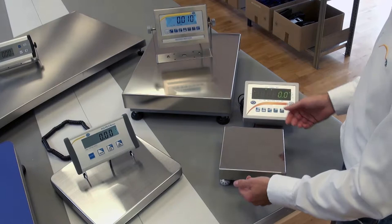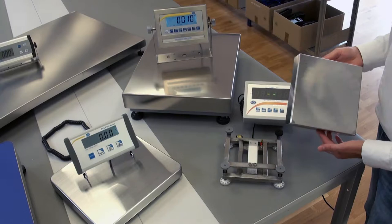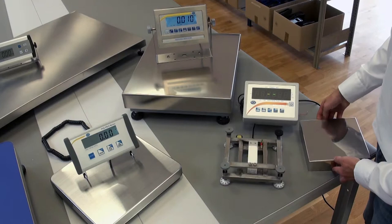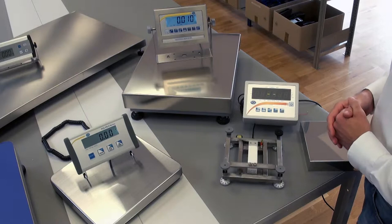First of all we take the single point version and take the weighing plate away. The weighing plate can be of different materials, in this case it is stainless steel, but it is also possible that this plate is made of wood, plastic, or other materials.